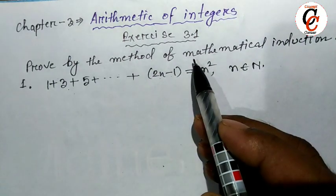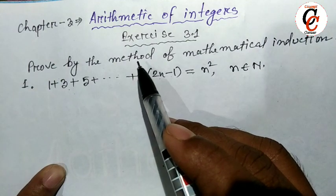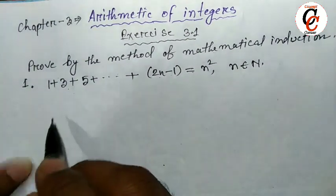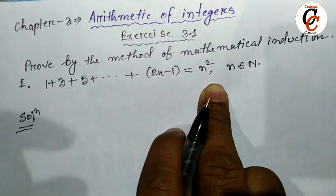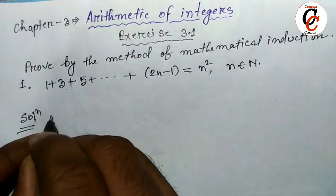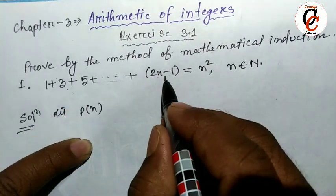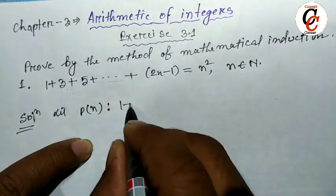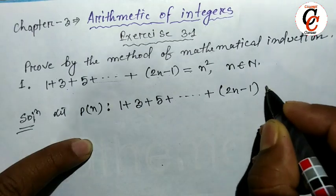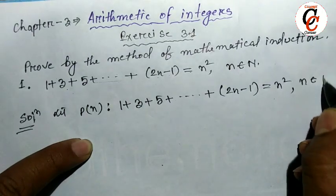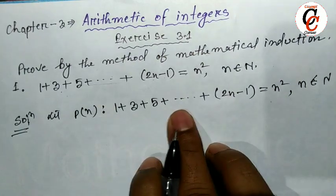This type of sum you will solve by mathematical induction — you will solve all sums as I am doing, in the same way. First of all, we will take this statement as P(n). Since the series is in natural number n, P(n) is: 1 plus 3 plus 5 plus up to (2n minus 1) equals n squared, where n belongs to N — that means n is a natural number.